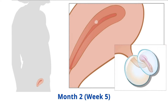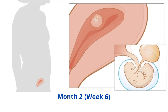Week 5: the yolk sac has formed, which provides nutrients to the embryo while the placenta develops. The embryo lengthens from a ball to a slipper shape. The major organs begin to form, including the neural tube, which will develop into the central nervous system.